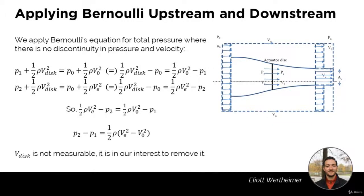We are going to apply Bernoulli's equation upstream and downstream of the actuator disk. Bernoulli's equation says that if you don't have any addition of energy or work done to the fluid in the stream tube, the total pressure — also called the stagnation pressure — will remain constant. We apply it before and after the actuator disk: the total pressure is constant on either side, but higher after the disk than before, because the disk does work on the fluid.